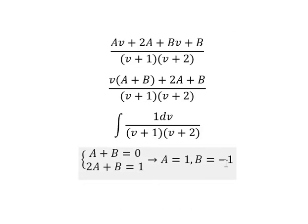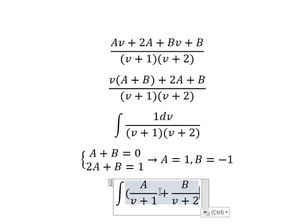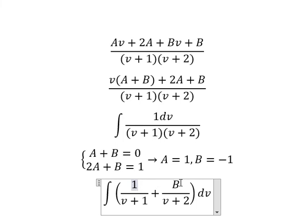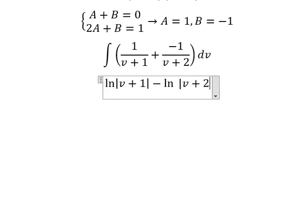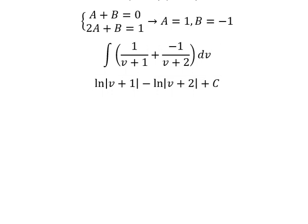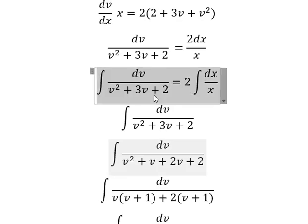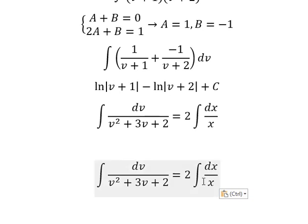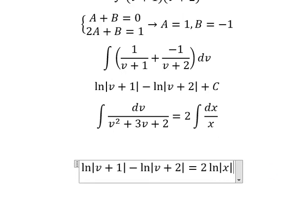And now we put A and B here. A equals to number 1, B equals to negative number 1. The integration of this one, we have ln of the absolute value of v plus 1, and the next one is ln of the absolute value of v plus 2, and we put about C. Now the integration of this one, the integration of dx over x, we have ln of the absolute value of x and we put about C.